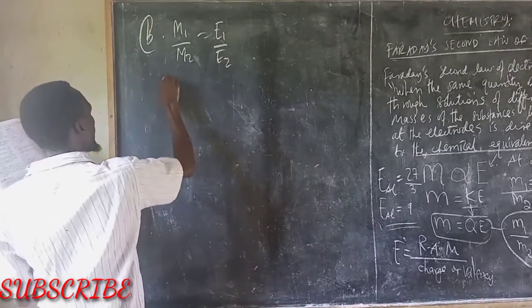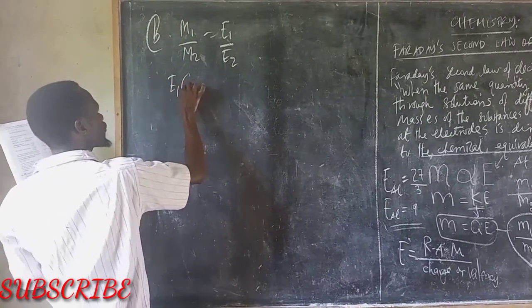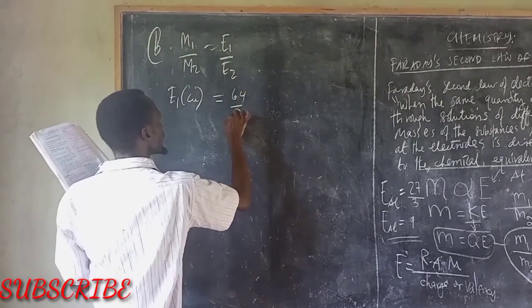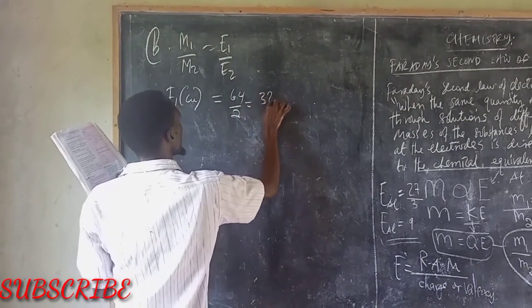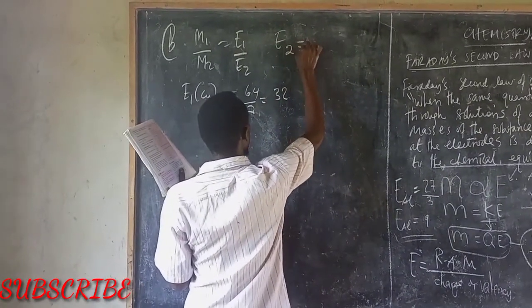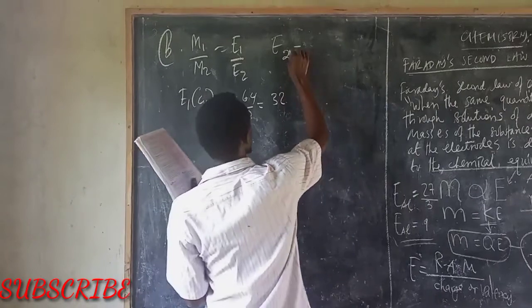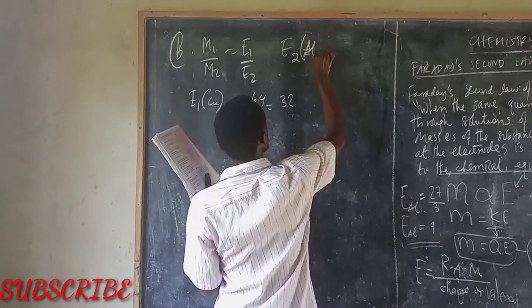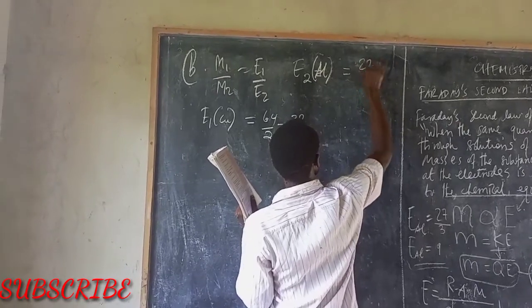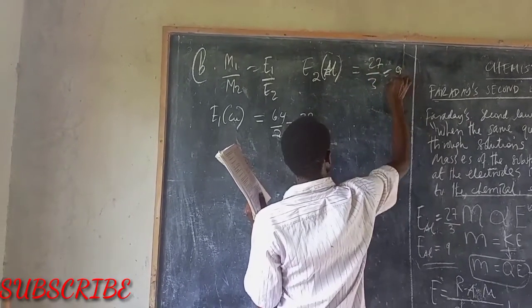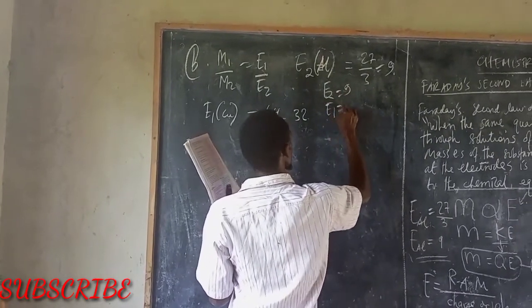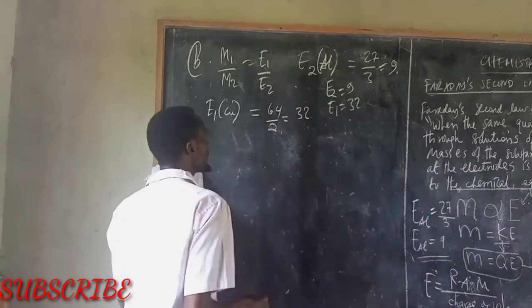Now E1, that is for what we have said for copper, is 64 over 2. This is 32. And then E2, if that is for aluminum, the atomic mass of aluminum over 3 is equal to 9. So E1 is equal now to 32, E2 is equal now to 9.